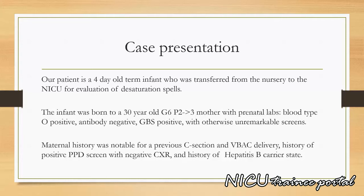The infant was born to a 30-year-old G6P2 now 3 mother with prenatal labs: blood type O positive, antibody negative, GBS positive with otherwise unremarkable screens. Maternal history was notable for a previous caesarean section and VBAC delivery, history of a positive PPD screen with negative chest x-ray, and history of hepatitis B carrier state.